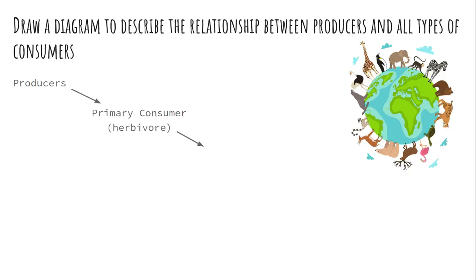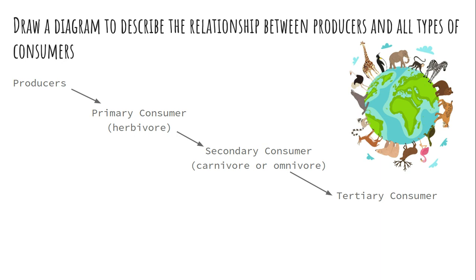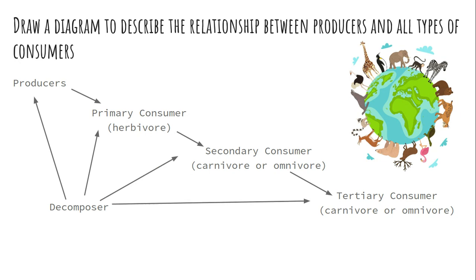Draw this into your notes — this is essentially the role of a food chain. Draw and describe the relationship between producers and all kinds of consumers. A producer produces the energy, which is eaten by the herbivore; the herbivore is eaten by a carnivore; the carnivore is eaten by another carnivore as we move up the food chain, transferring energy from one group to another. That is how energy flows through ecosystems. Once all the energy has flowed and each organism dies, a decomposer acts on every single one to return matter back to the earth.